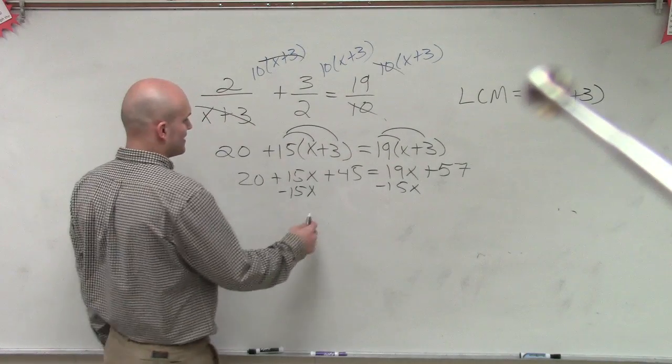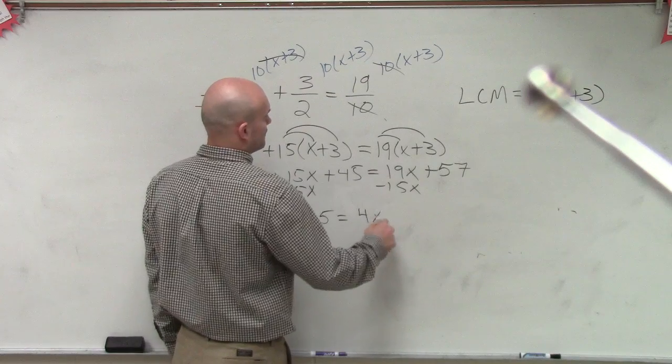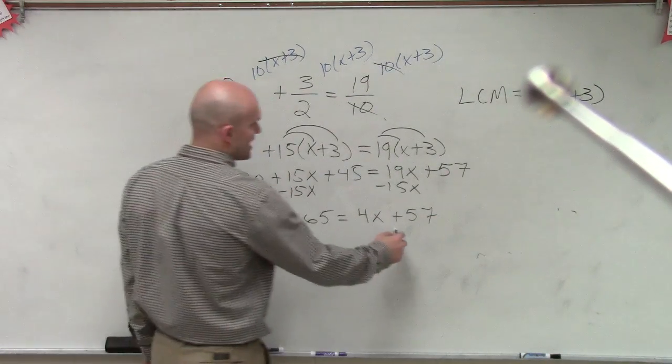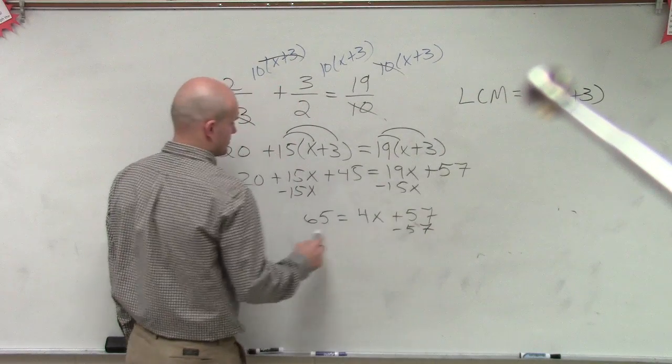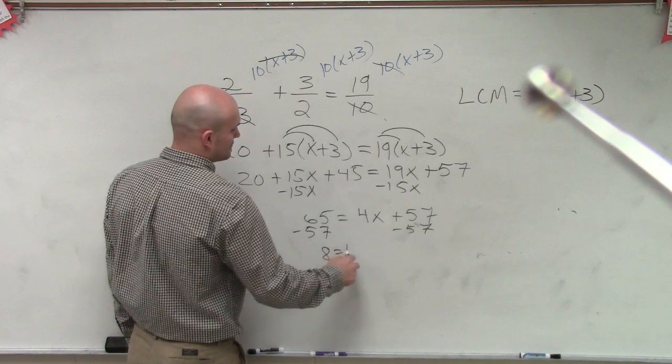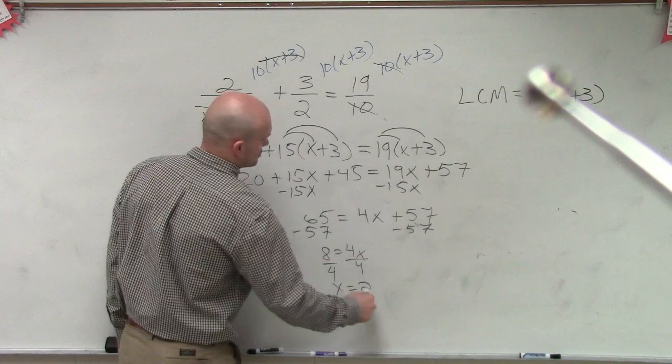So therefore, I have 20 plus 45 is going to be 65 equals 4x plus 57. Now I subtract 57 on both sides, and then I get 8 equals 4x divided by 4, x equals 2.